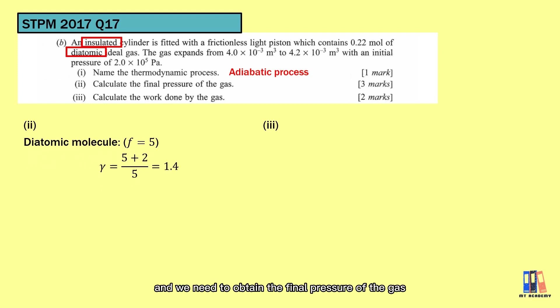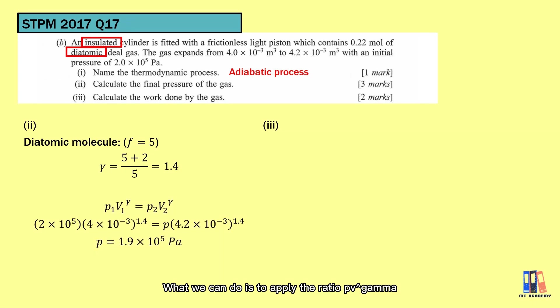The gas undergoes expansion and we need to obtain the final pressure of the gas. What we can do is to apply the ratio of PV to the power of gamma, put in the values as in the equation. The final pressure is 1.9 times 10 to the power of 5 Pascal.